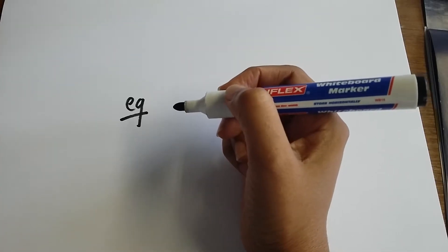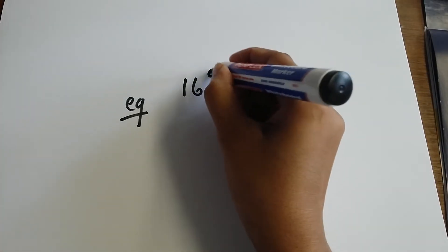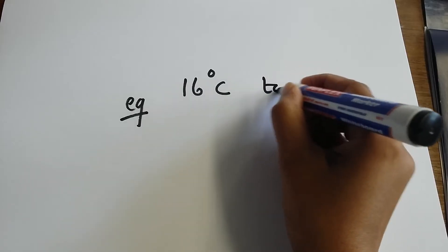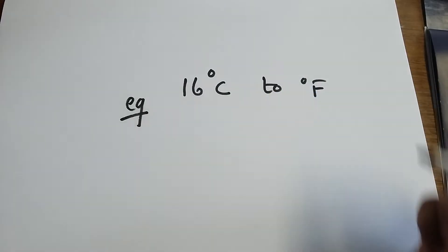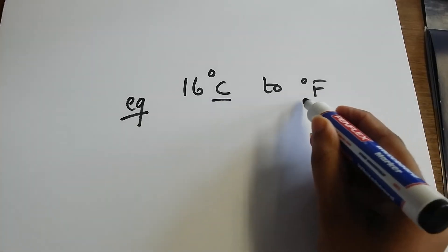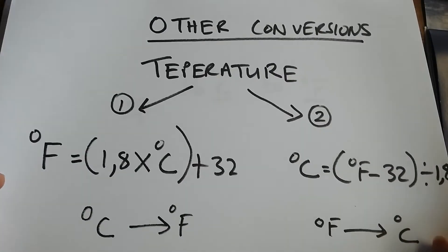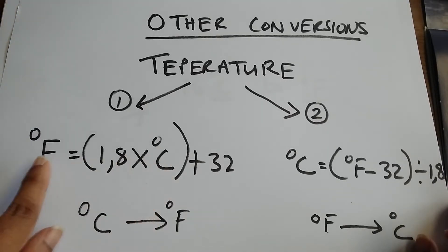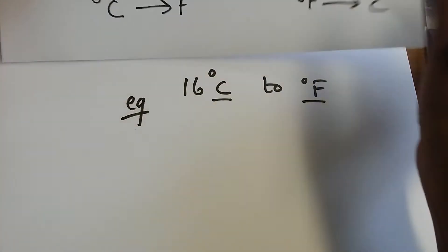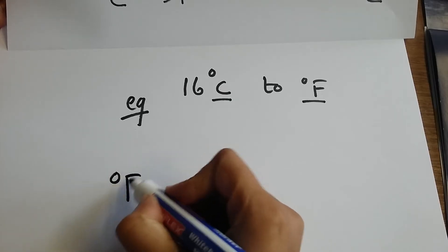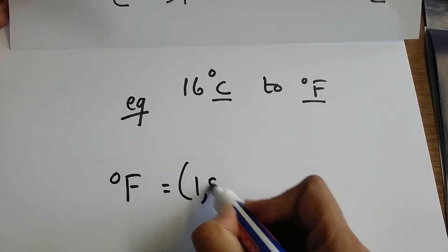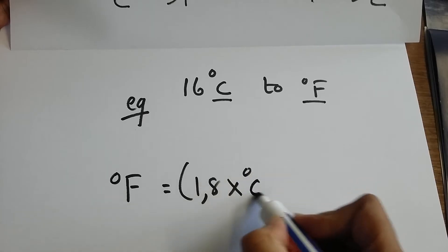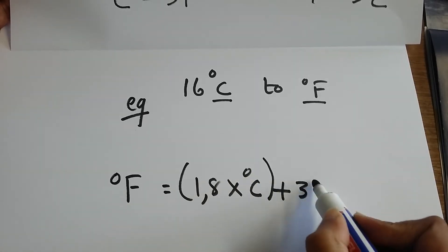My question says I have 16 degrees Celsius and I need to convert it to degrees Fahrenheit. So I'm going from Celsius into Fahrenheit. I go to my equations — I'm going from Celsius into Fahrenheit, so I'm going to select equation 1, which says degrees Fahrenheit is equal to 1.8 times degrees Celsius plus 32.